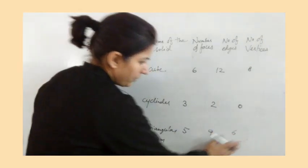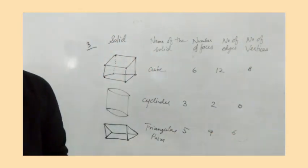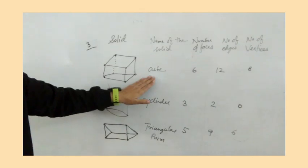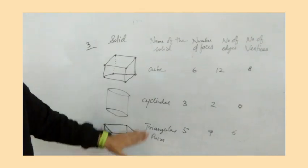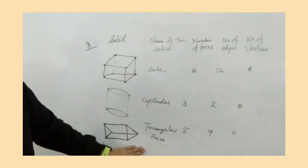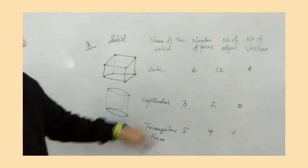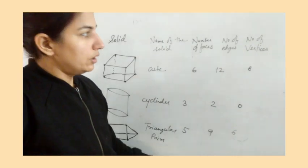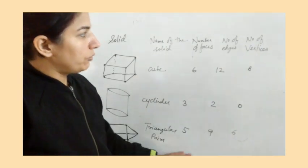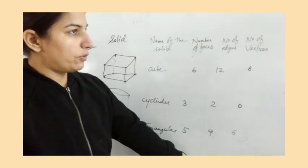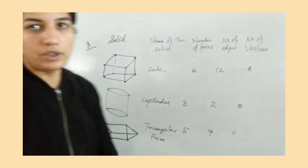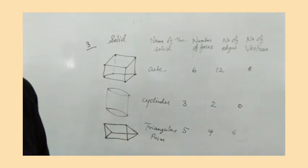The number of vertices: one, two, three, four, five, six. So this figure is a cube, this is a cylinder, and this is a triangular prism — with their respective number of faces, number of edges, and number of vertices.